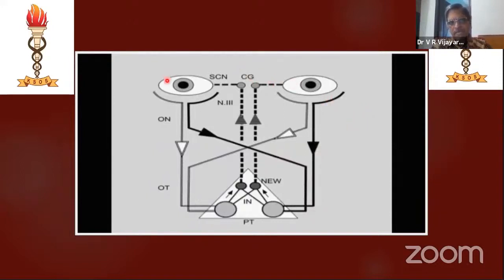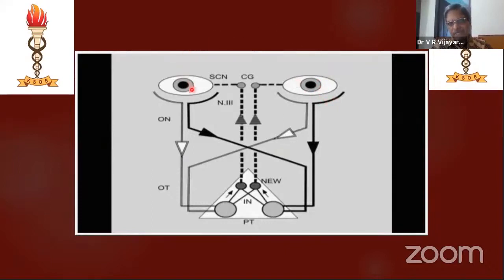Imagine I put a light in the right eye — the right pupil will constrict. That means the right pupil is reacting for direct light reflex. At the same time, when you put a light in the right eye, the left pupil also will constrict — then you say the left pupil is reacting for consensual light. Left eye direct means left is reacting for direct; at the same time the right is reacting for consensual.